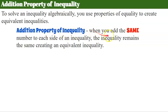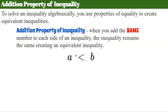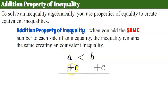The addition property of inequality states that when you add the same number to each side of an inequality, the inequality remains the same, creating an equivalent inequality. Even though we're dealing with an inequality, we want to do equal things to both sides — we need to keep the balance. Our inequality symbols can be less than, greater than, less than or equal to, or greater than or equal to, and we still need to keep balance on both sides, just as in an equation. So if we add the same value to both sides, A plus C will still be less than B plus C.